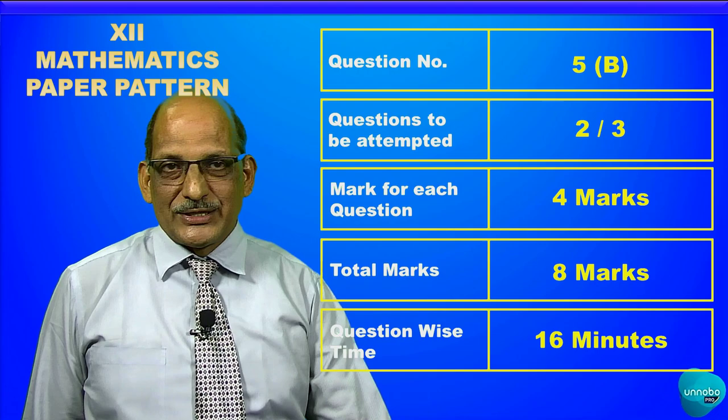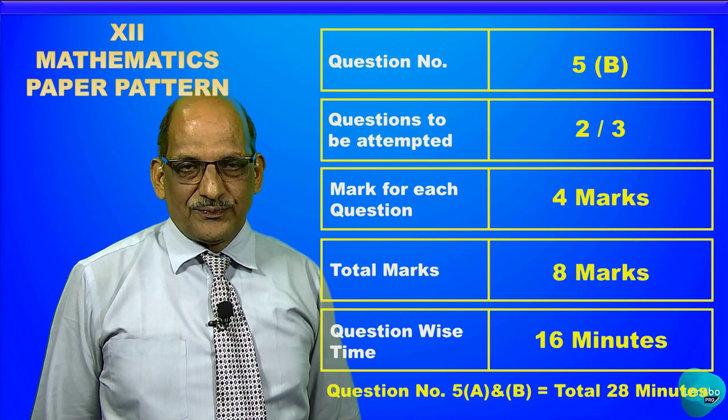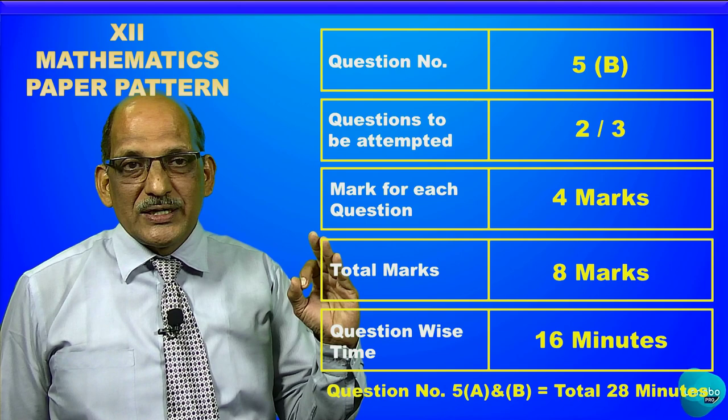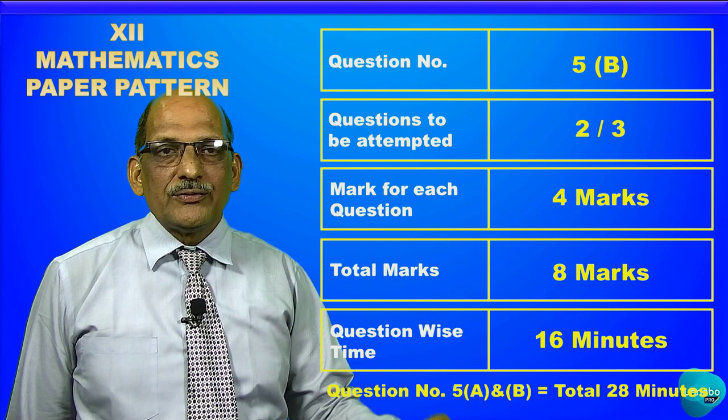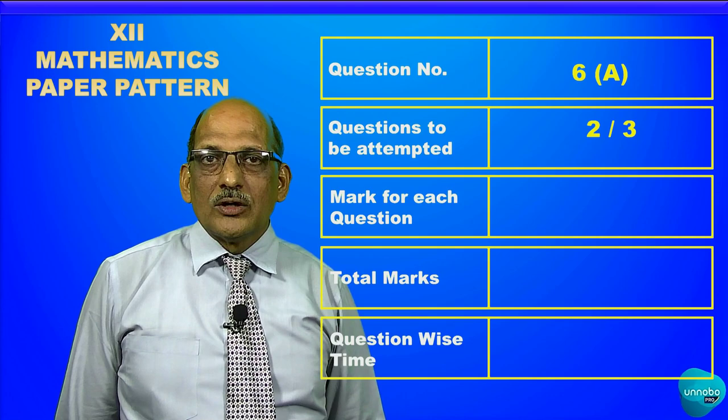Question number 5B should be completed in 16 minutes. The complete question number five, including A and B, has to be completed in 28 minutes — same as Section 1 where question number two takes 28 minutes. Then comes question number six, which also has two sub-questions A and B.